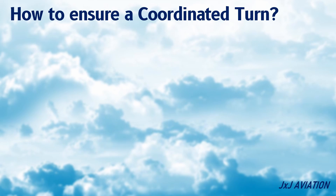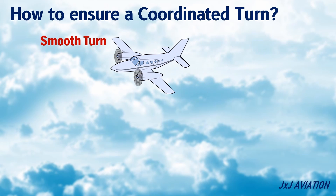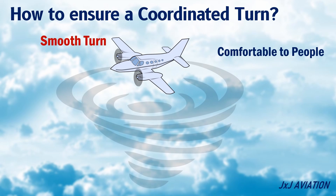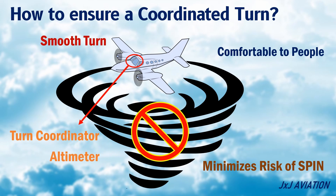A coordinated turn is a smooth turn which is comfortable to the people on board the airplane and also minimizes the risk of entering a spin. The turn coordinator and the altimeter are used to ensure proper inputs are given to the ailerons, rudder and the elevator for a coordinated turn.